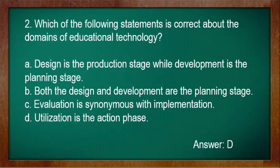Number 2: Which of the following statements is correct about the domains of educational technology? A. Design is the production stage while development is the planning stage. B. Both the design and development are the planning stage. C. Evaluation is synonymous with implementation. D. Utilization is the action phase. Answer: D.